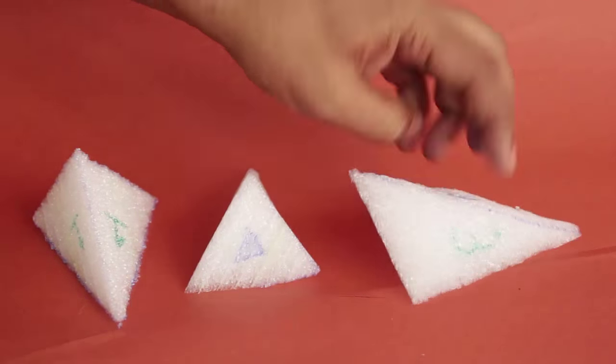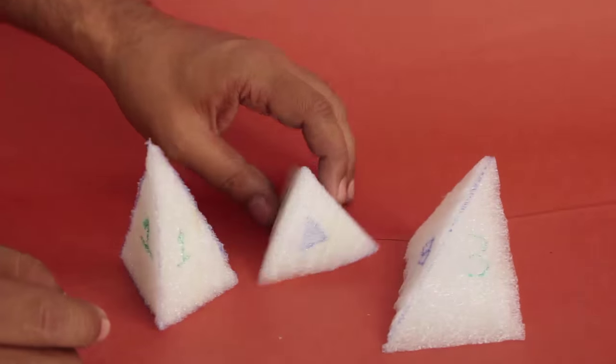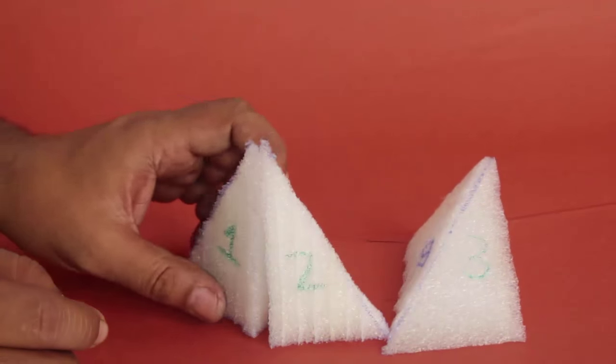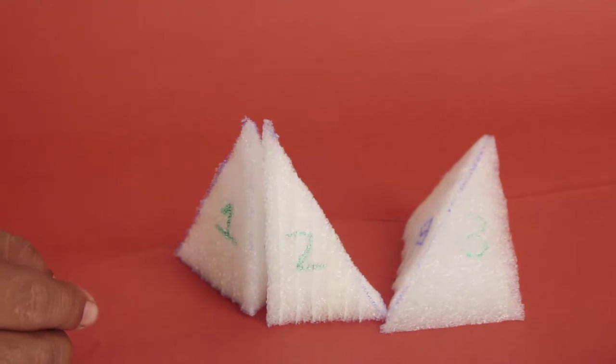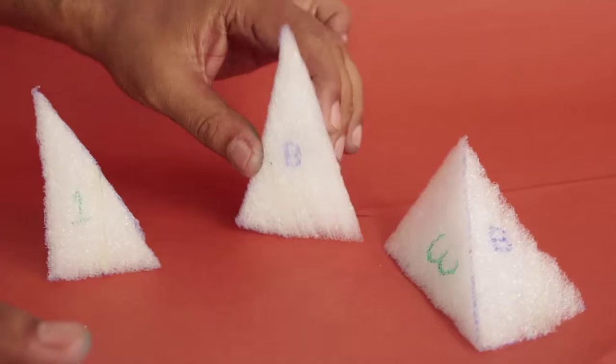Pyramid 1 and 2 have the same base which was the original triangular base of the prism and same height, so pyramid 1 and 2 have same volume. Pyramid 2 and 3 have the same base marked B and same height, so pyramid 3 also has the same volume.